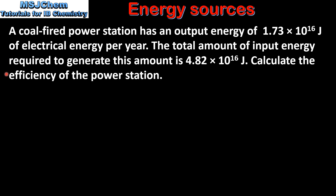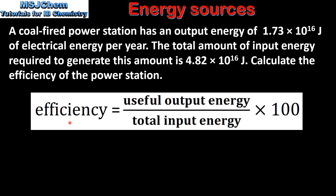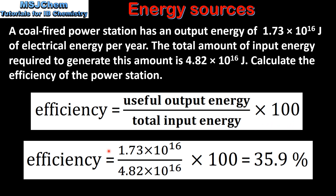Calculate the efficiency of the power station. The efficiency is equal to the useful output energy divided by the total input energy, multiplied by 100. Our useful output energy is 1.73 × 10¹⁶ and our total input energy is 4.82 × 10¹⁶. This gives us an efficiency of 35.9%.